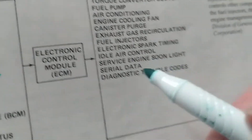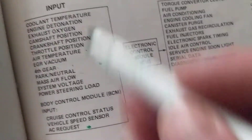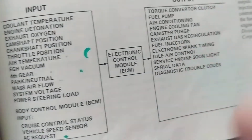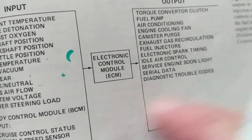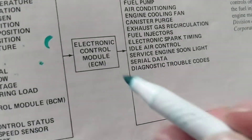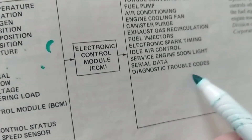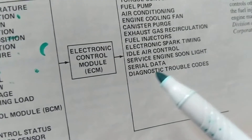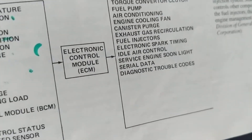Another important output is the check engine light. When the computer sees something not right, its programming triggers the check engine light — which we dread, especially at inspection time. It also controls serial data — the computer data line — and generates diagnostic trouble codes. If a sensor is out of its expected voltage or temperature range, the driver sees the check engine light and a trouble code you can extract via the DLC using a scanner.